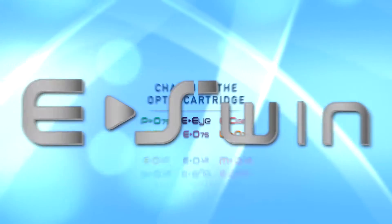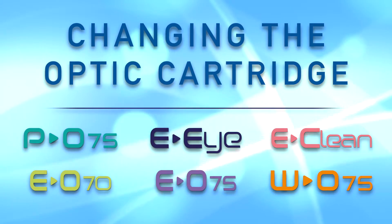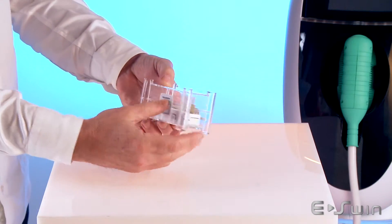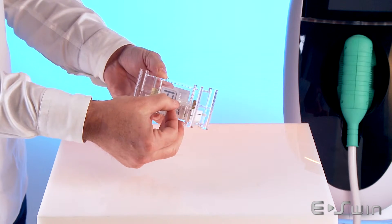Carefully follow these steps in order to replace the optic cartridge on the device shown on screen. First, open the cartridge package by cutting off security stickers.